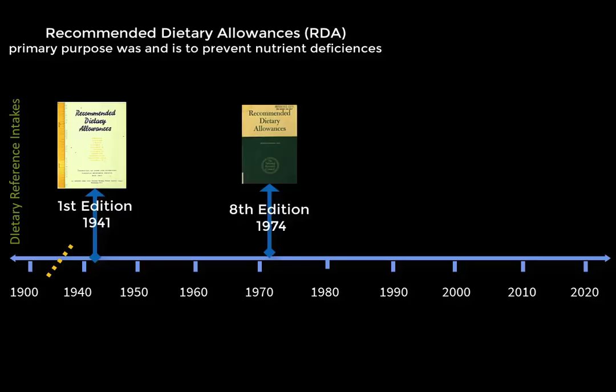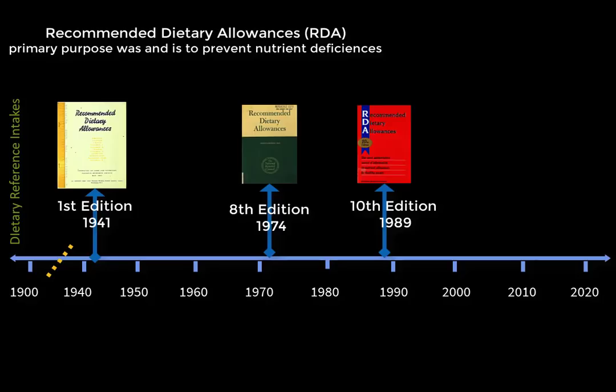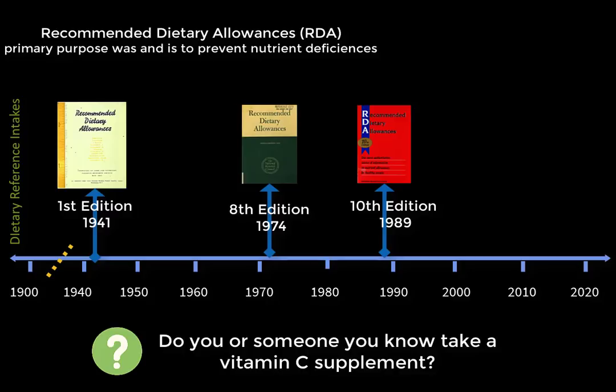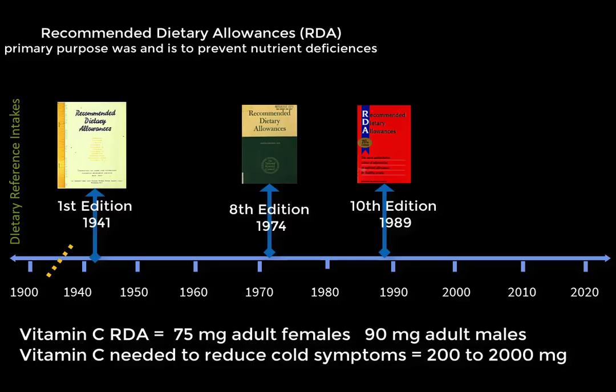Updates to RDA recommendations were made regularly, but starting in the 1970s and increasingly in the 1980s and early 90s, there was a clash between the intent of the RDAs and what the public wanted. For example, do you or someone you know take a vitamin C supplement? If so, think about why — likely to prevent or reduce cold symptoms. But RDAs for vitamin C do not focus on that amount. They focus on the amount to prevent deficiency diseases, specifically scurvy. The nutrition community wanted the RDAs to maintain focus on adequacy and preventing deficiencies, but the public wanted information beyond deficiencies.